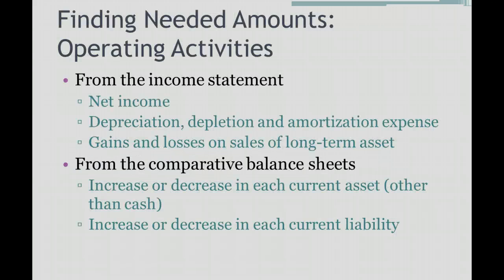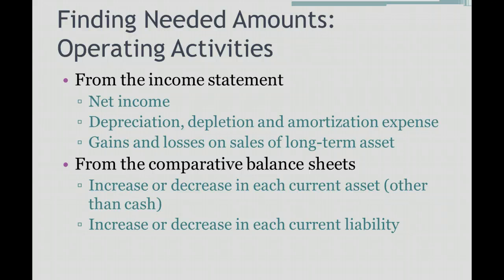When using the indirect method to calculate cash flows from operating activities, you need to look at two places. First, you need to go to the income statement and find net income, depreciation — and also depletion and amortization if present, which are treated identically to depreciation — and any gains and losses on sale of long-term assets.